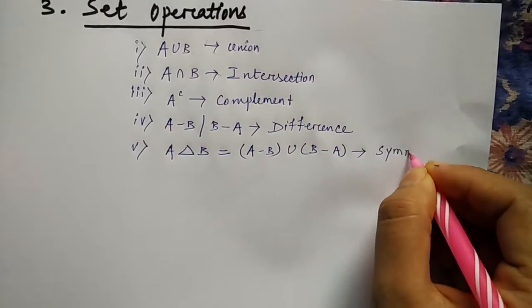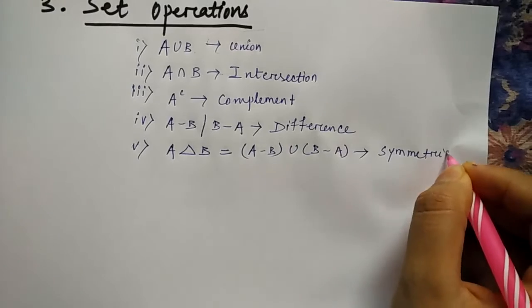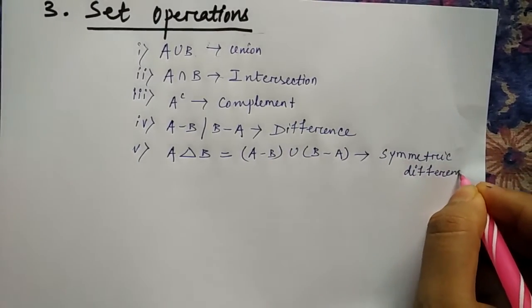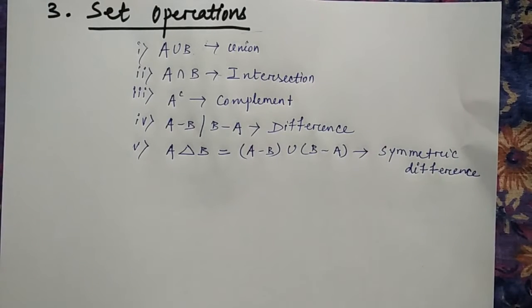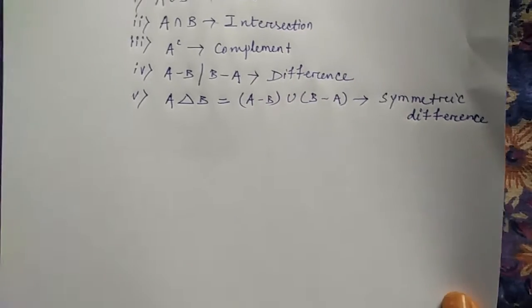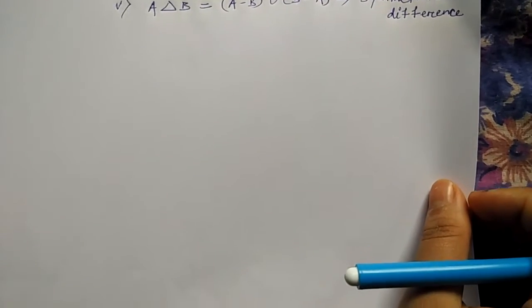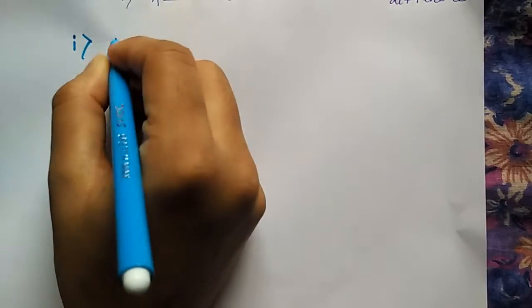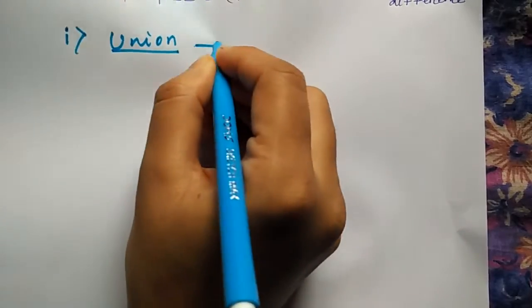Then there is the rule: A delta B equals A minus B union B minus A, and this is called as symmetric difference.